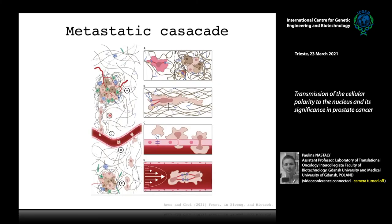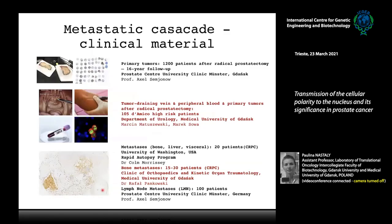Briefly, the metastatic cascade begins with a primary tumor, invasive cells escaping into the bloodstream, circulating, and then establishing proliferation at a distant site to form metastasis.